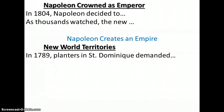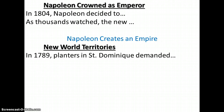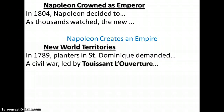Outside of France, France had tried to gain territories. In 1789, when the ideas of the French Revolution had reached the planters in Saint-Dominique — a Caribbean island — they demanded rights. These French planters in Saint-Dominique demanded rights, and slaves demanded freedom. Saint-Dominique had planters demanding more rights than they were given, and the slaves were going to demand freedom.